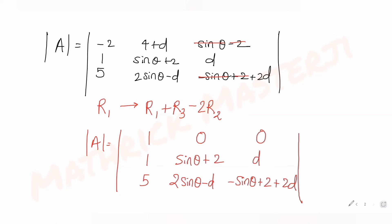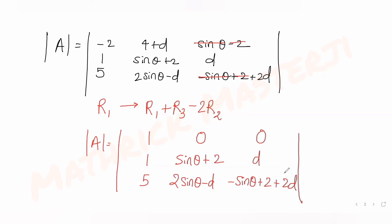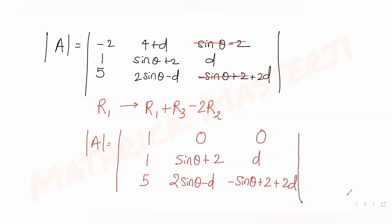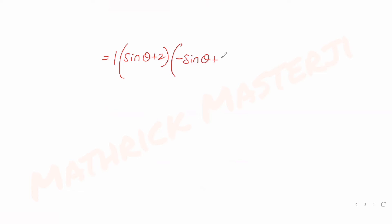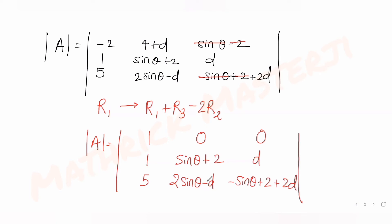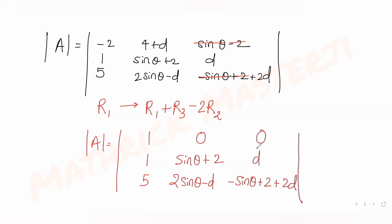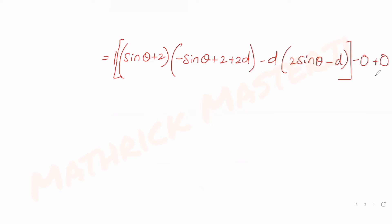Expanding the determinant along the first row: since the second and third elements of row 1 are 0, we get 1 times the 2×2 minor. That gives us (sinθ+2)(-sinθ+2+2D) - D(2sinθ-D). Multiplying out: sinθ and -sinθ give -sin²θ, plus terms in sinθ and D.